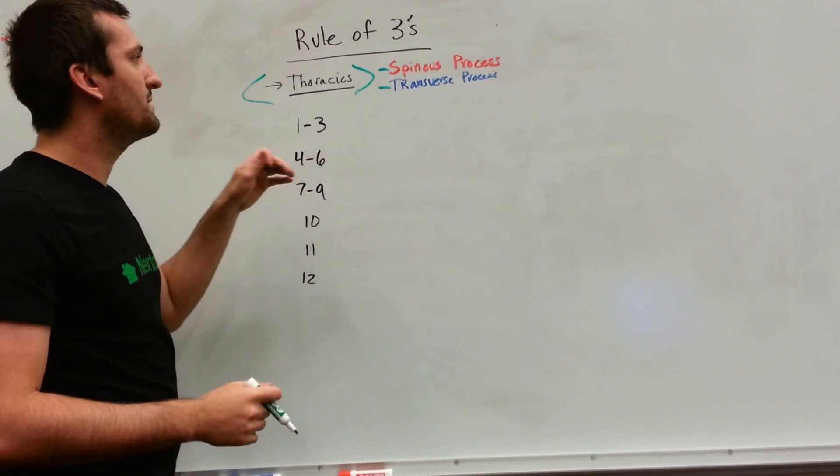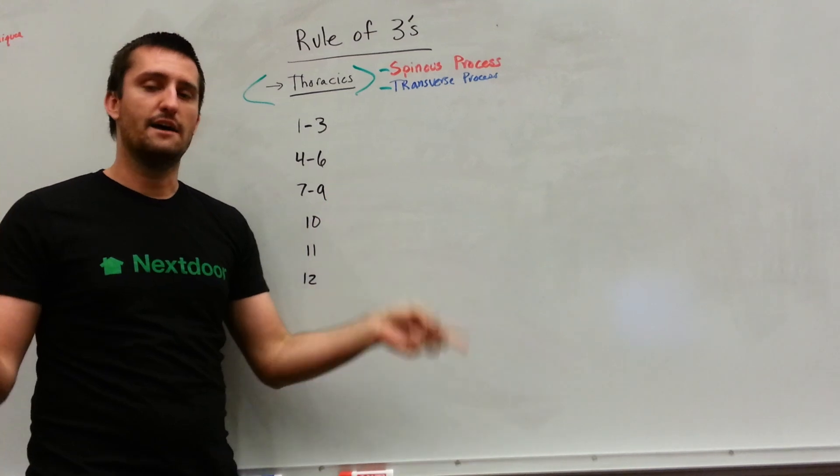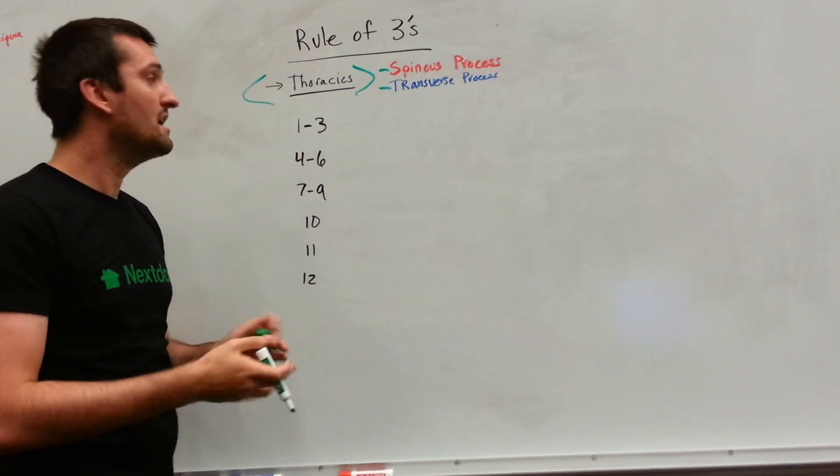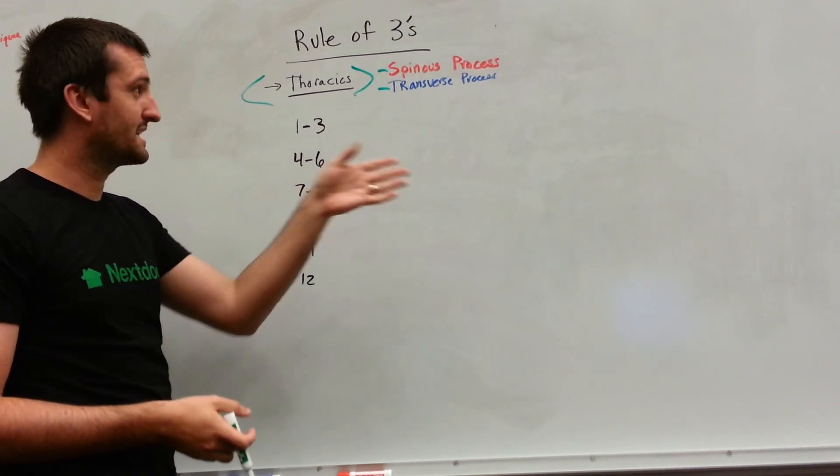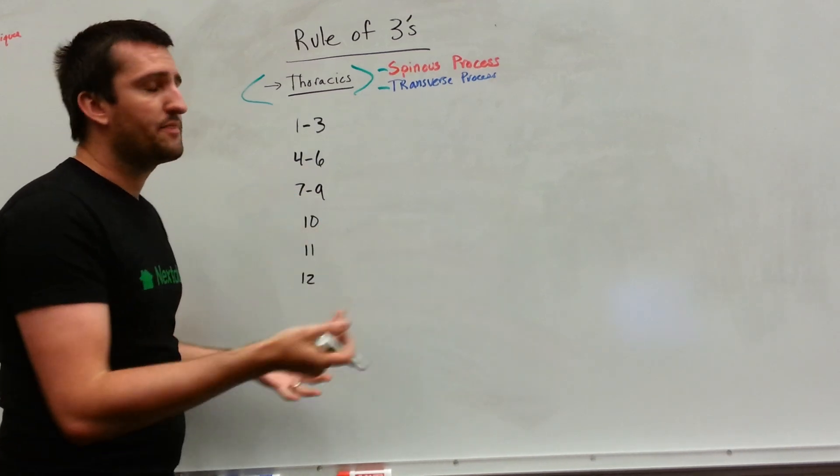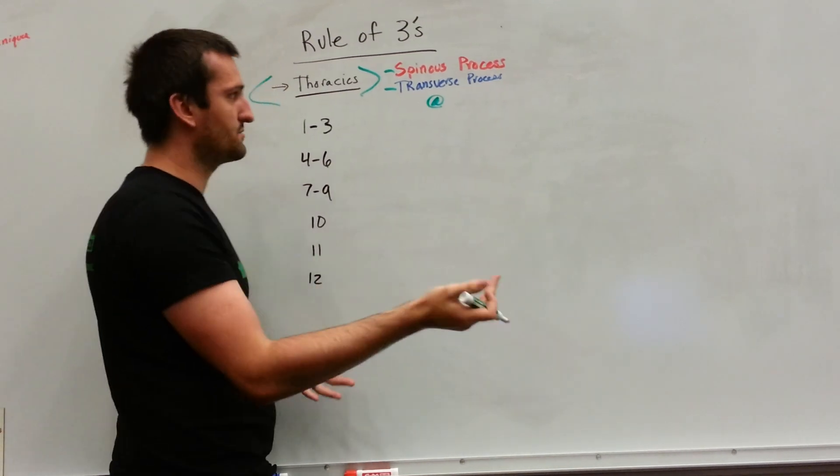So if we're talking about T6 there will be two transverse processes sticking laterally out of T6. However the spinous process on the other hand, the one process sticking out the posterior midline, it can either be at the level of the vertebral body,